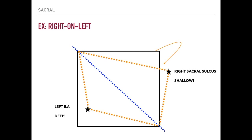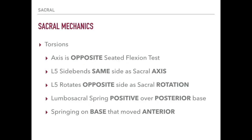There are some more important rules to be aware of. In a torsion, the axis is always opposite the seated flexion test. Recall from lesson five: a positive standing flexion test indicates an innominate somatic dysfunction, but a positive seated flexion test tells us there's a sacral somatic dysfunction. In sacral somatic dysfunctions, your axis is always opposite the side that the seated flexion test is positive on. If the seated flexion test is positive on the right, the axis is a left axis; if positive on the left, the axis is a right axis.